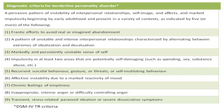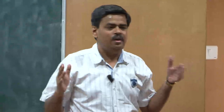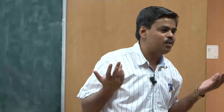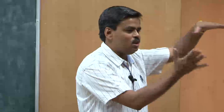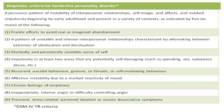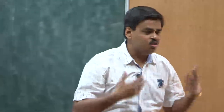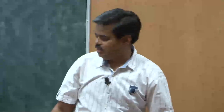The next cluster B personality disorder is borderline personality disorder. Borderline cases were discussed right from the beginning — we had normal reactions, pathological reactions, and borderline cases in between. Borderline personality disorder is reflected in terms of a pervasive pattern of instability of interpersonal relationships, so the interpersonal relationships that you initiate are very difficult to maintain.